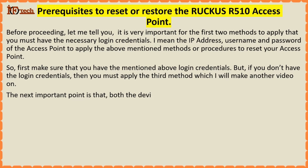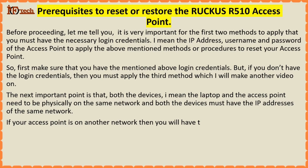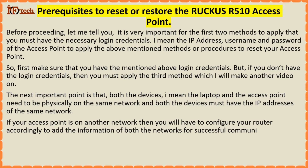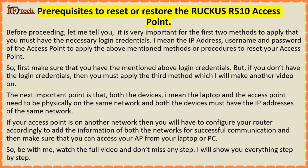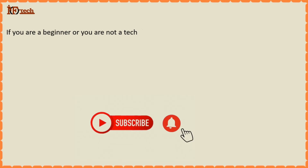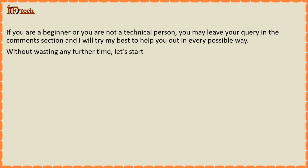The next important point is that both devices — the laptop and the access point — need to be physically on the same network, and both must have IP addresses of the same network. If your access point is on another network, you will have to configure your router accordingly for successful communication, and then make sure you can access your AP from your laptop or PC. Watch the full video and don't miss any step — I will show you everything step by step.